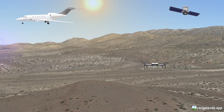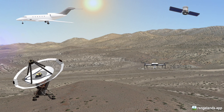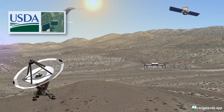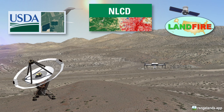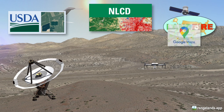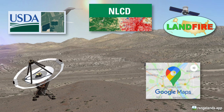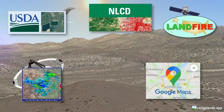Some remote sensing data that you might use every day are even collected from the earth's surface. A few examples of these products are the USDA's National Agricultural Imagery Program or NAIP, the National Land Cover Dataset, LandFire, and even Google Maps has aspects of remote sensing involved. You also may not have thought of weather radar as remote sensing, but in fact it is.